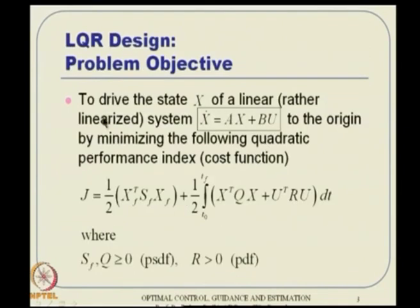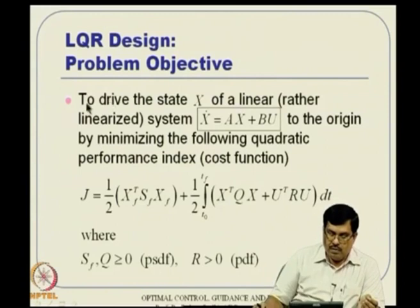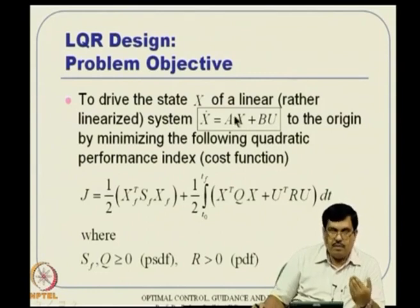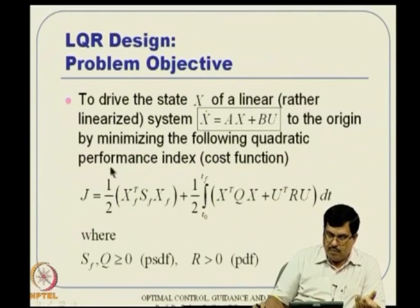The objective is to drive the state X of a linear system — many times a linearized system — to the origin, meaning X(t_f) must equal zero. This can be done by minimizing the following quadratic performance index. The terminal penalty is X_f^T S_f X_f, and the path penalty keeps state deviation small and control usage as small as possible.